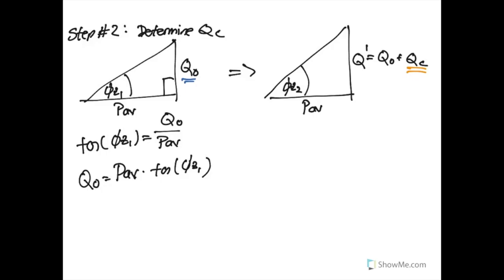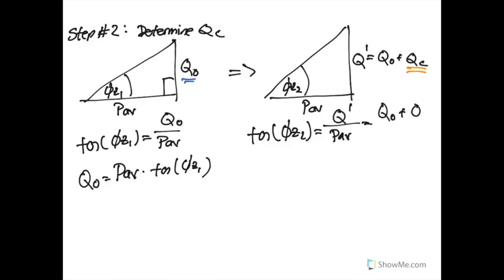Now we want to figure out how much the new reactive power is going to be. We know this because we've already found our desired phase angle. The tangent of φZ2 equals the new reactive power over the real power, which equals Q₀ plus Qc. Q₀ is already calculated and fixed.